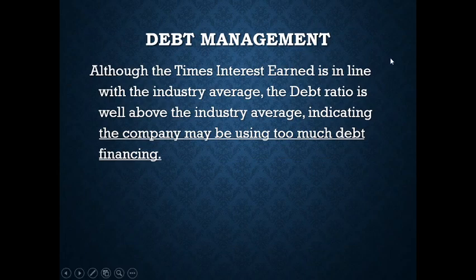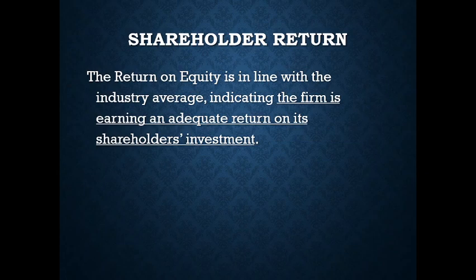Debt management is all about whether the firm is overly reliant on debt financing. Although the times interest earned is in line with the industry average, the debt ratio is well above the industry average — which is bad. The debt ratio is inferior to the industry average, indicating the company may be using too much debt financing. Finally, shareholder return: the only ratio we have is ROE, which is in line with the industry average, indicating the firm is earning an adequate, competitive return on shareholders' investment.